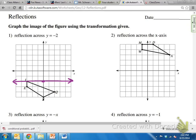Now we know where our mirror is. We go to each point and count how many units it takes to get to the mirror. And then we count that many spaces past the mirror to put the next point.